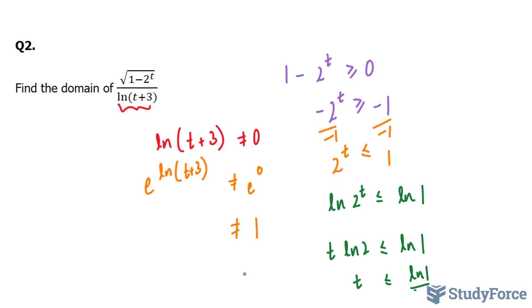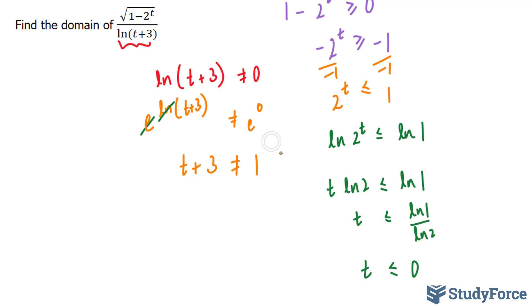e^0 is equal to 1. Anything to the power of 0 is equal to 1. And on the left side, this e will cancel out with the ln, and you're left with t + 3 cannot equal 1. Bringing this over, 1 - 3, you end up with t cannot equal -2.